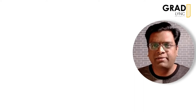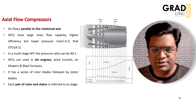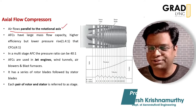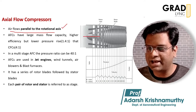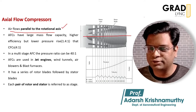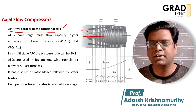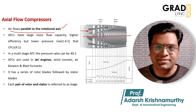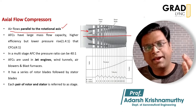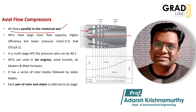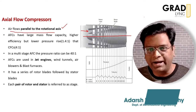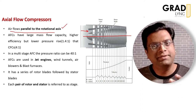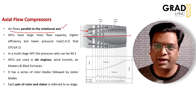We call it an axial flow compressor because the air flows parallel to the rotational axis — meaning the air flows parallel to the axis of the engine. That's why we call it axial flow: air enters axially and exits axially, unlike radial compressors where air enters axially but exits in a radial direction.